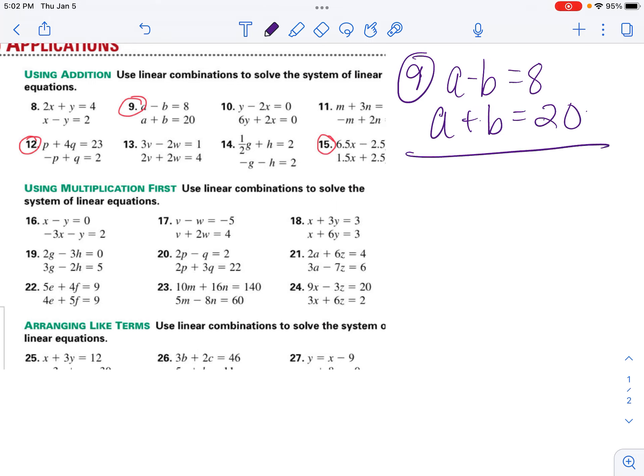So I see these are both positives, so 1a plus 1a is 2a. Negative 1b plus positive 1b cancels out. 8 plus 20 is 28.